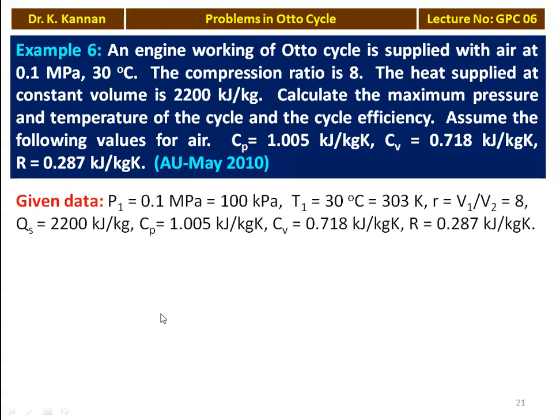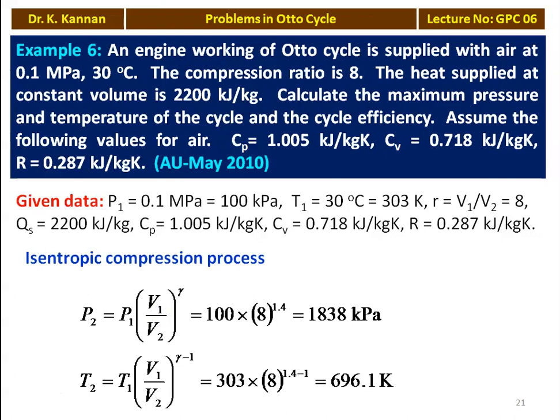Given data: P1 equals 0.1 MPa which is 100 kPa, T1 equals 30°C which is 303 Kelvin, R equals V1/V2 equals 8, Qs equals 2200 kJ/kg, Cp equals 1.005 kJ/kg·K, Cv equals 0.718 kJ/kg·K, gas constant R equals 0.287 kJ/kg·K. For isentropic compression: P2 equals 100 × 8^1.4 equals 1838 kPa. T2 equals 303 × 8^0.4 equals 696.1 Kelvin.